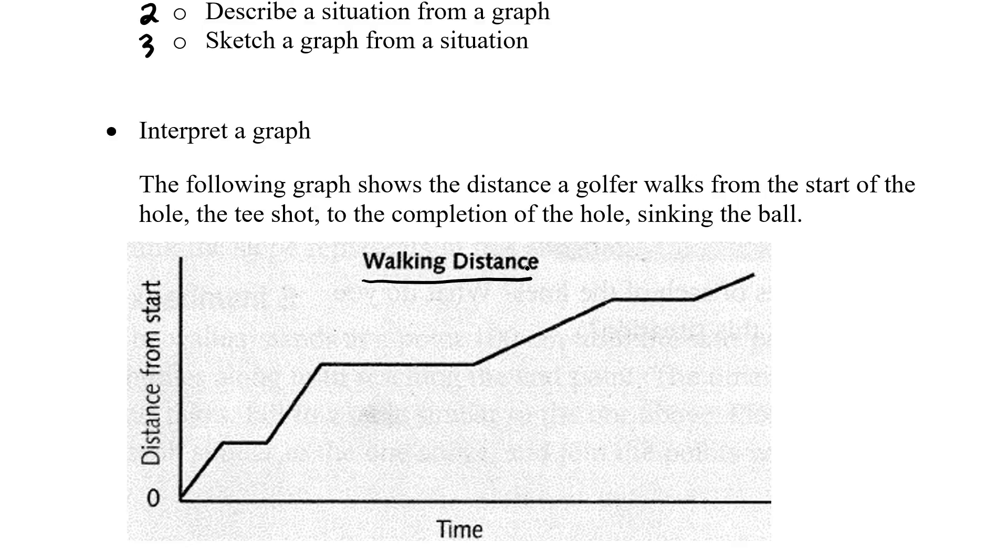Remember this here says it's walking distance. So when the line is moving one, two, three spots, four spots, we've actually got walking. When it is flat, the golfer is not getting closer to the hole. He has stopped.